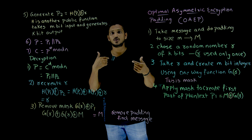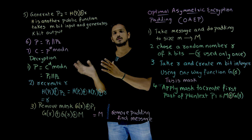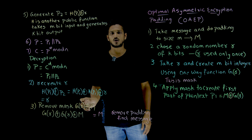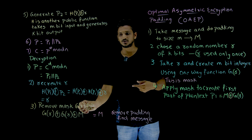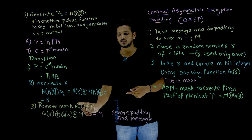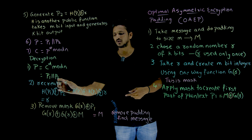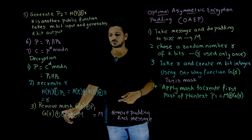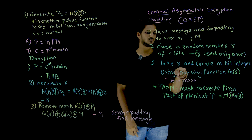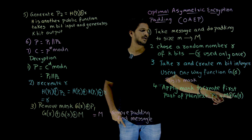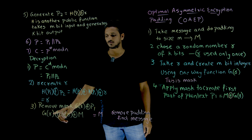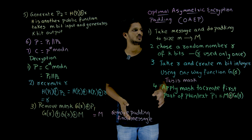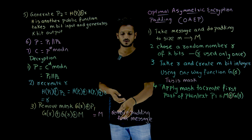Once you recreate R, you can generate the mask and remove it. Because based on R, you generated the mask. So now remove the mask: compute G(R) XOR P1. You know R and you know the G function. G(R) XOR P1 means G(R) XOR (M XOR G(R)). The two G(R) terms get cancelled and you get M. Means you got the message. From this, remove the padding to find the actual message.